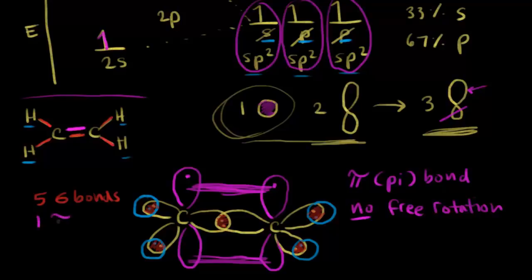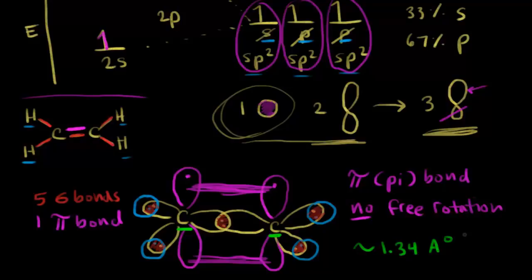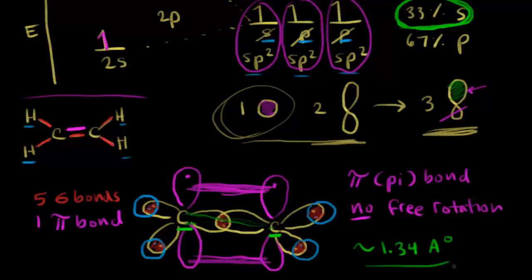If you're thinking about the distance between the two carbons, it turns out to be approximately 1.34 angstroms, which is shorter than the distance between the two carbons in ethane — approximately 1.54 angstroms. A double bond is shorter than a single bond. One way to think about that is the increased s character: this increased s character means the electron density is closer to the nucleus, making the lobe a little bit shorter than before, which decreases the distance between the two carbon atoms. So 1.34 angstroms.